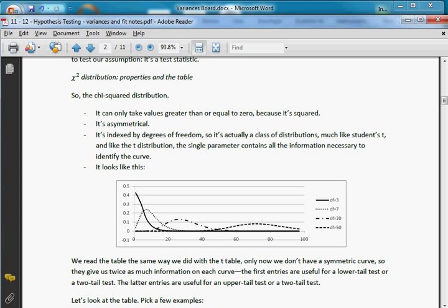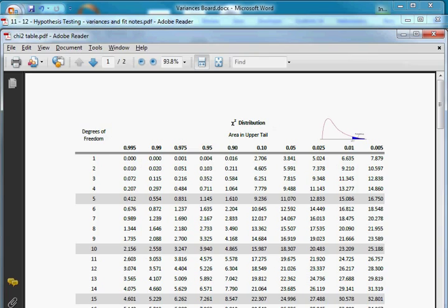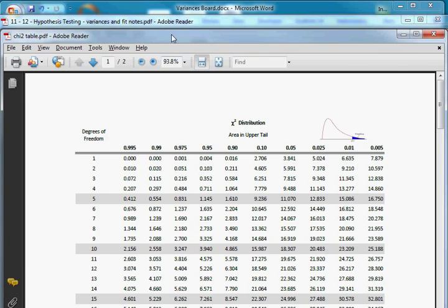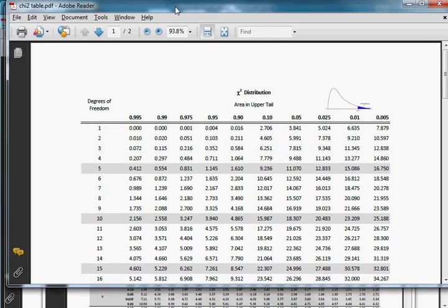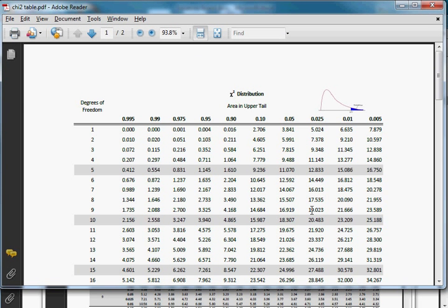So we read the table the same way we did with the t-table, but now we don't have a symmetric curve. So they have to give us twice as much information. You guys want to see a chi-squared table, so chi-squared table I have here. So unlike a t-table, this is asymmetric, so they give us twice as much information. And I'll show you how to read this in a sec.